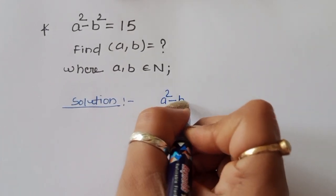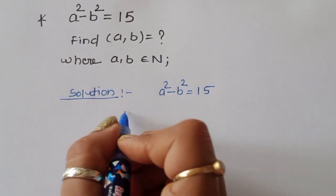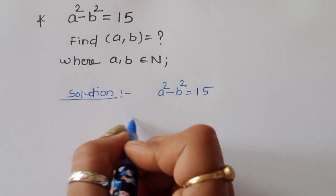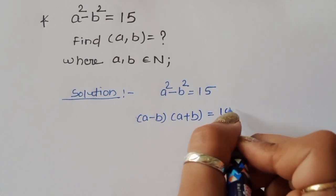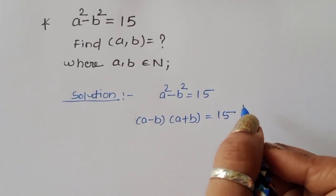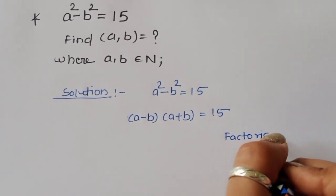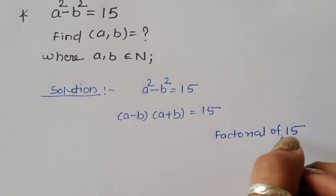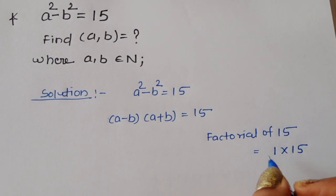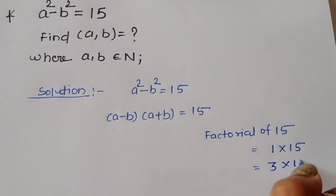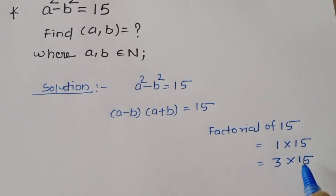A squared minus B squared is equal to 15. We can use the formula here: A minus B times A plus B is equal to 15. Now, first we are finding the factors of 15. The factors of 15 are 1 times 15 and 3 times 5, because the condition is A minus B is less than A plus B. So we are taking these two factor pairs.